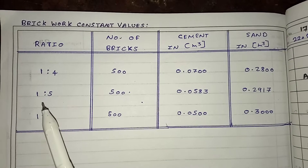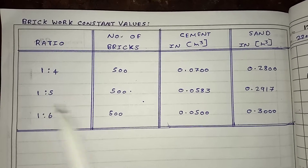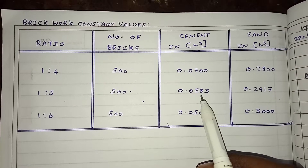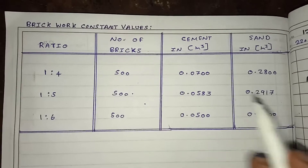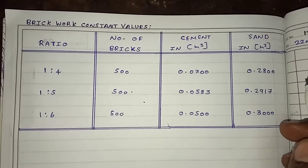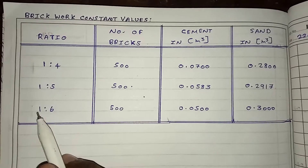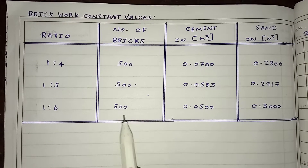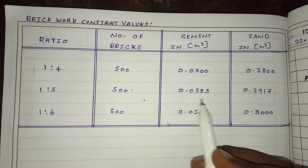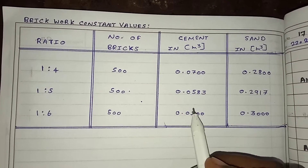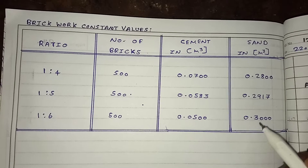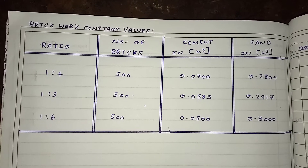For the 1 is to 5 ratio, the number of bricks remains constant at 500. The cement is 0.0583 meter cube per 1 meter cube of brickwork, and the sand value is 0.30 meter cube per 1 meter cube of brickwork.